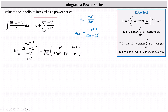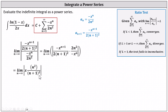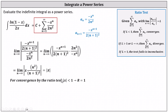Now let's begin to simplify. A negative divided by a negative simplifies to a positive. 2 divided by 2 simplifies to 1. And x to the power of n plus 1 divided by x to the power of n simplifies to one factor of x. The limit simplifies to the limit as n approaches infinity of x times n squared divided by the square of n plus 1. Notice as n approaches infinity, n squared is degree 2, and so is the square of n plus 1. Therefore the limit of this part equals the ratio of leading coefficients, which is 1 divided by 1, or 1. Therefore the limit equals the absolute value of x, which must be less than 1 for convergence, indicating the radius of convergence equals 1.